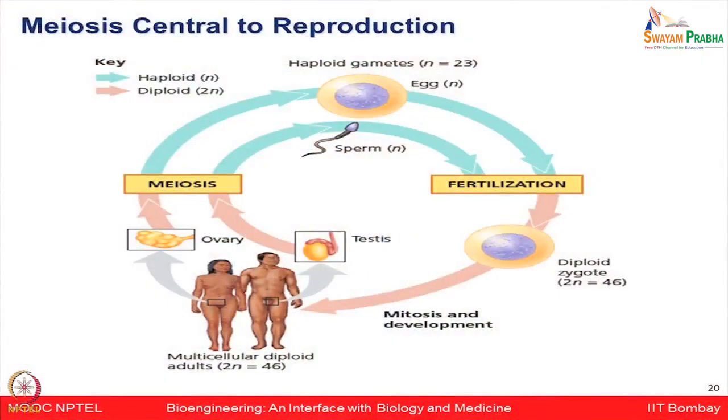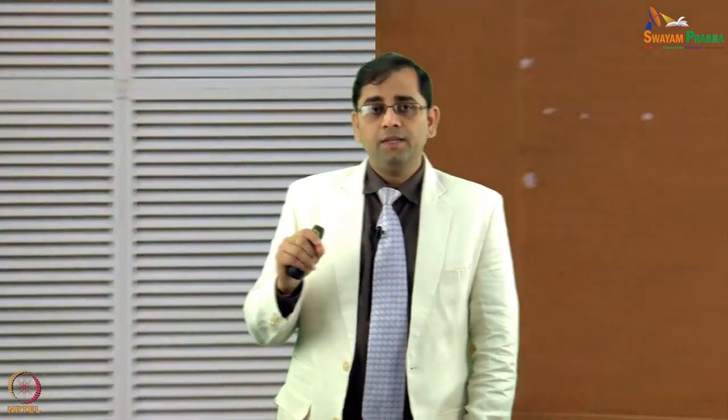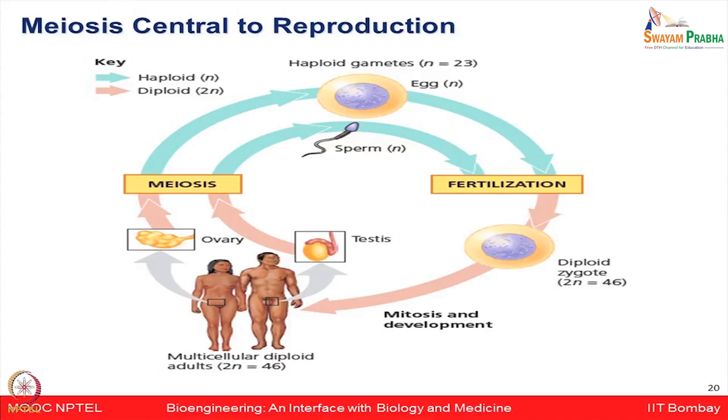Meiosis is central to the reproduction process. Sperm are produced inside the testis and eggs inside the ovary — both are haploids shown in green. After fertilization they form the diploid zygote, which is 2N. Multicellular diploid adults are formed having 2N = 46 chromosomes.